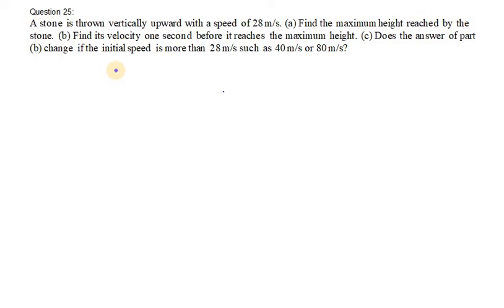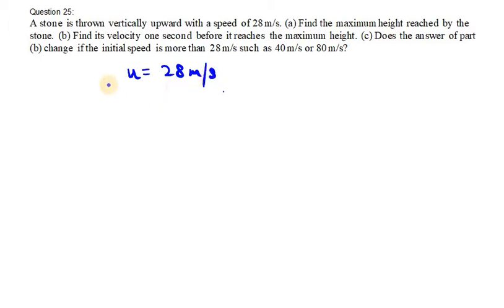Hello everyone, let's start with question number 25. A stone is thrown vertically upwards with a speed of 28 meters per second. So we are given U, that is the initial velocity, equal to 28 meters per second. We need to find the maximum height.